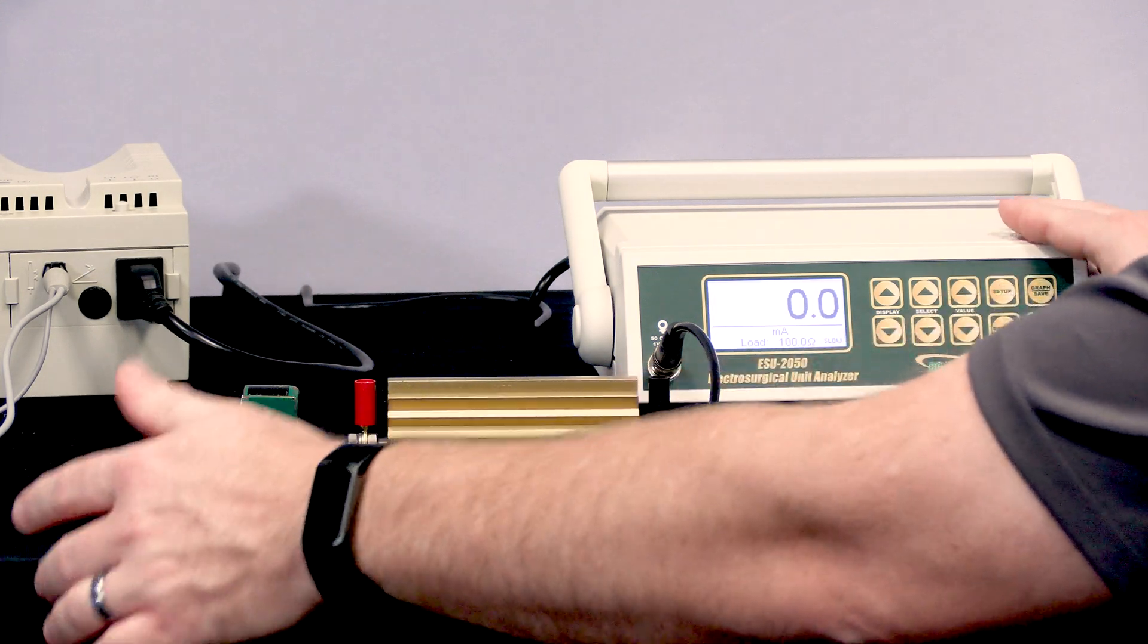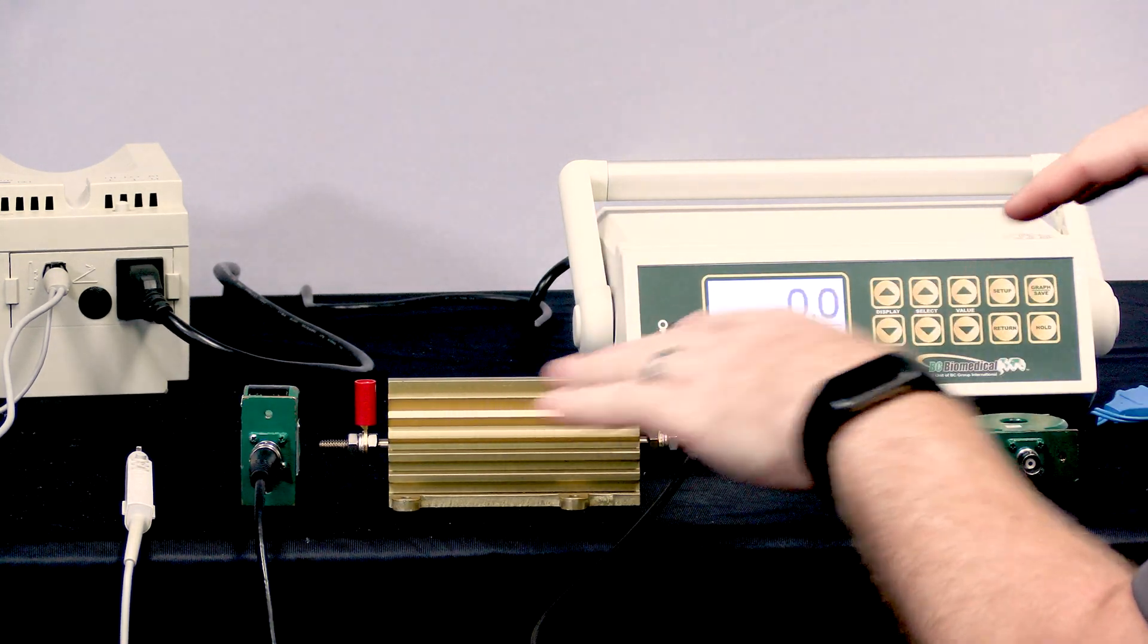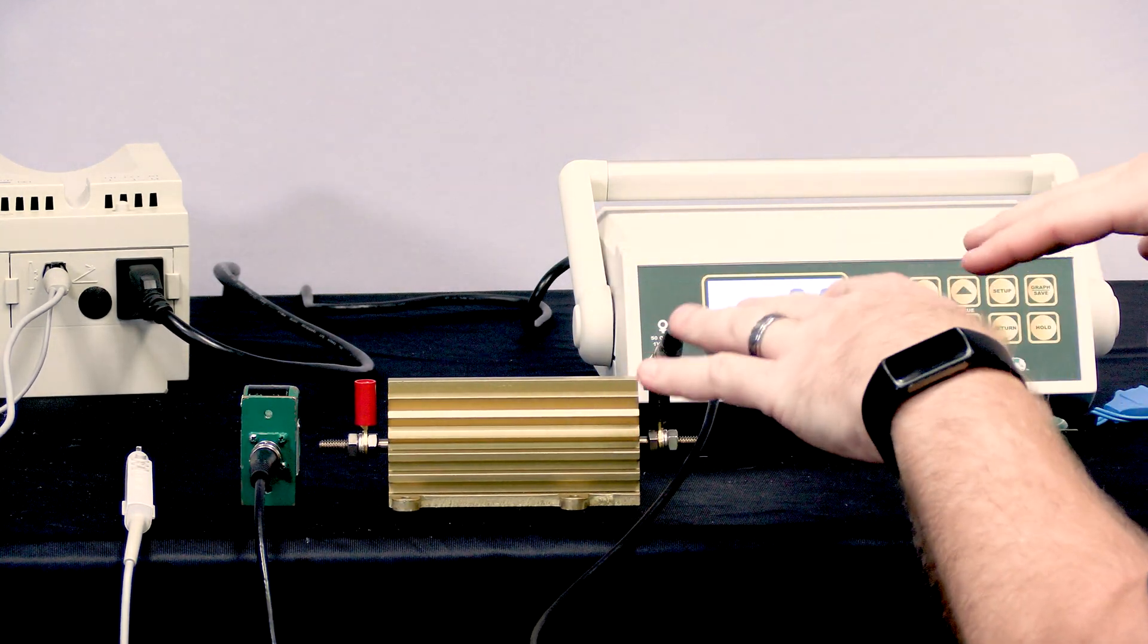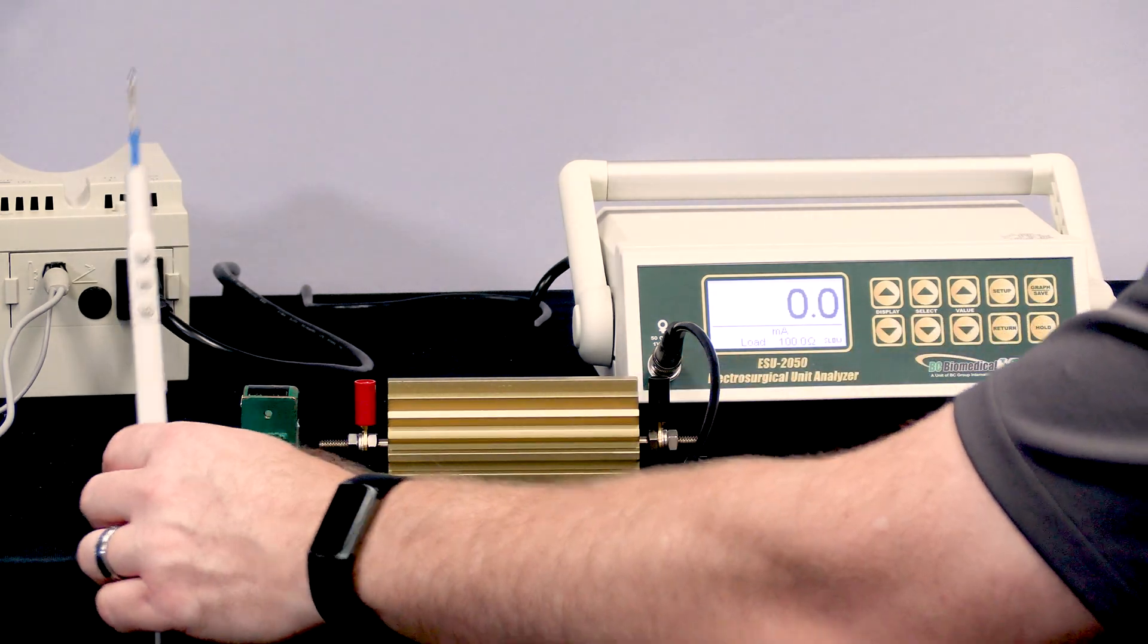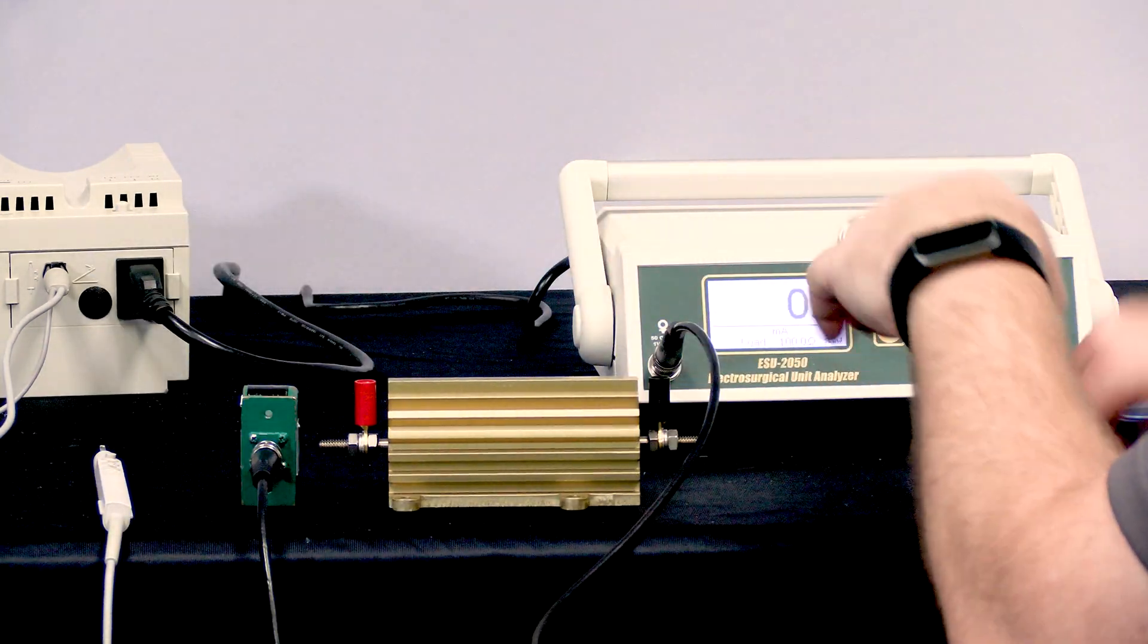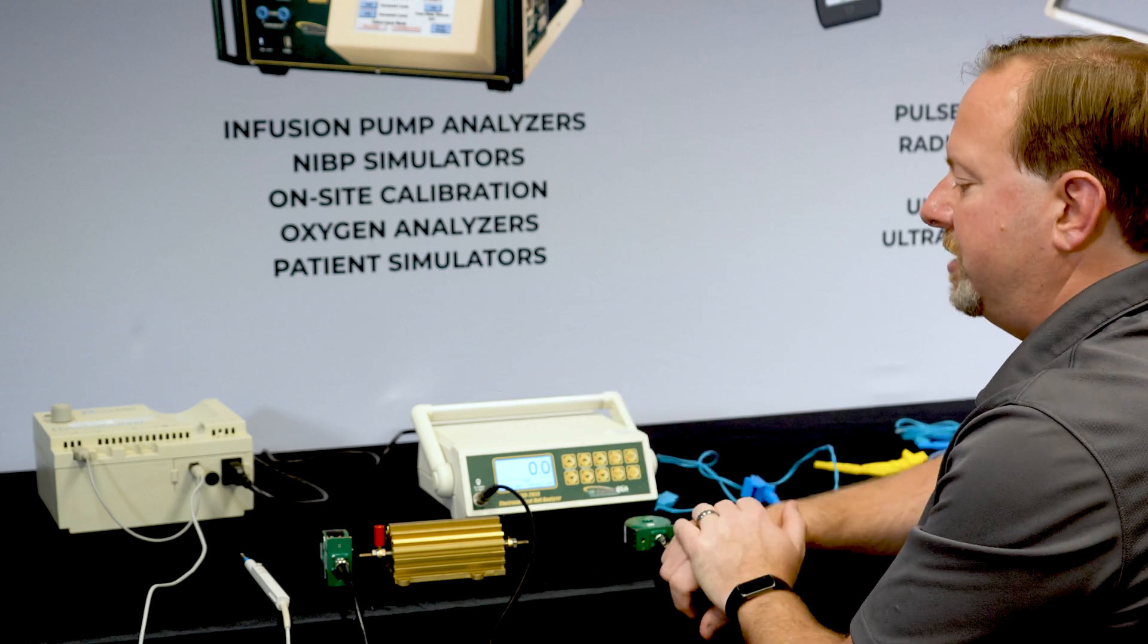So in surgery, it actually uses the table that the patient is laying on, which is connected to earth ground. The circuit path is out the scalpel, through the patient, to the table, back to earth ground, and back to the generator.